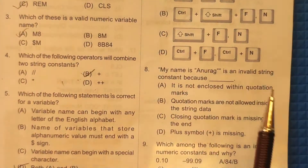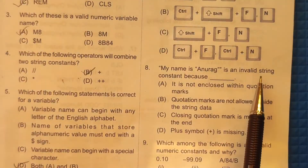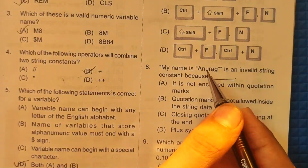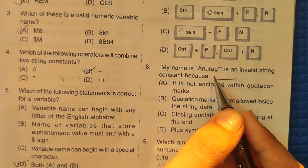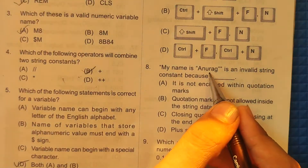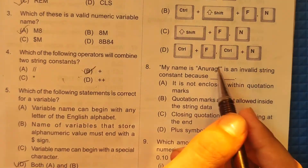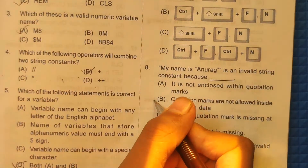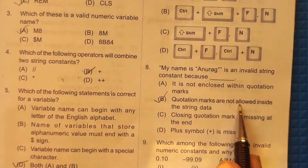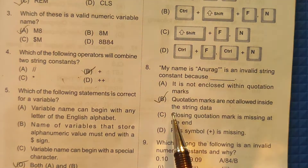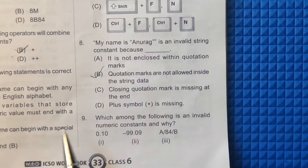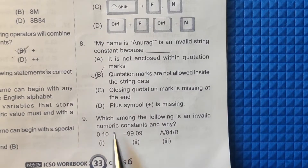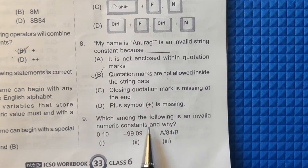Question 8: 'My name is "Anu Rag"' is an invalid string constant because double quotes are not allowed inside a string in computer language. So our correct answer is option B: quotation marks are not allowed inside the string area.